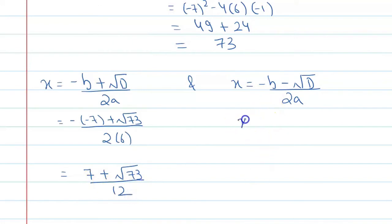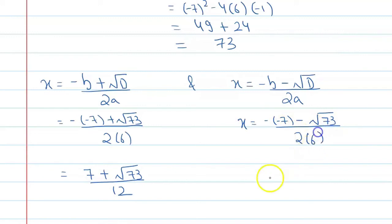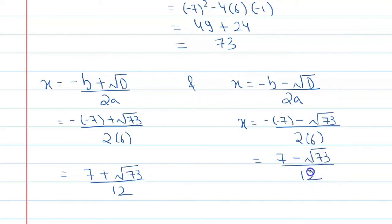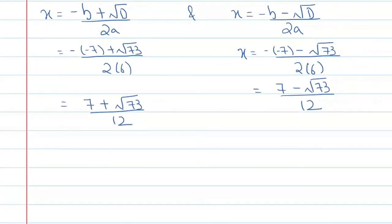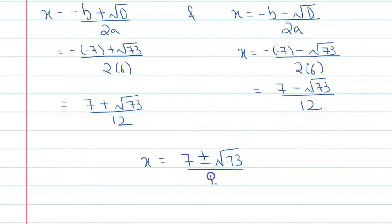If you find the other root, then again minus minus 7 minus under root 73 upon 2 into 6. This value will become 7 minus under root 73 upon 12. If you compare both, you can directly write x's value as x equal to 7 plus or minus under root 73 upon 12.